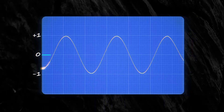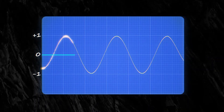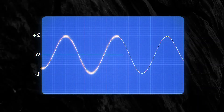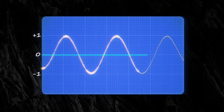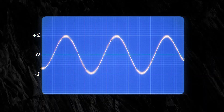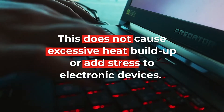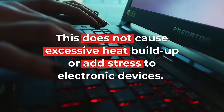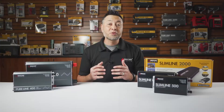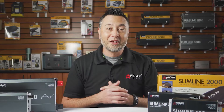A pure sine wave, or PSW, is the best because the voltage rises and falls smoothly and changes polarity instantly when the voltage crosses the zero volt line. This does not cause excessive heat buildup or add stress to electronic devices, as it is a smooth and consistent change.